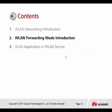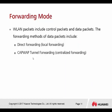Forwarding mode introduction: WLAN packets include the control packet and the data packet — two different types. Control packets are used by the AC and the AP. Data packets are user data packets. The forwarding methods for data packets include direct forwarding (also called local forwarding) and CAPWAP tunnel forwarding, also called centralized forwarding.